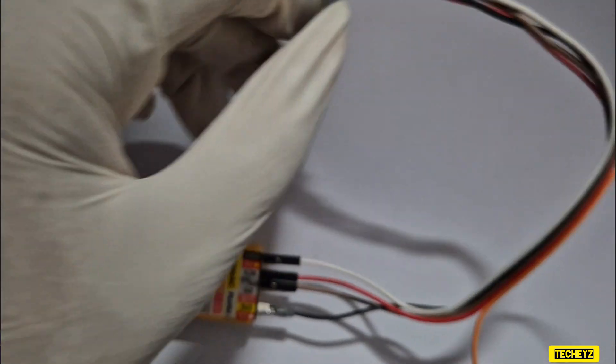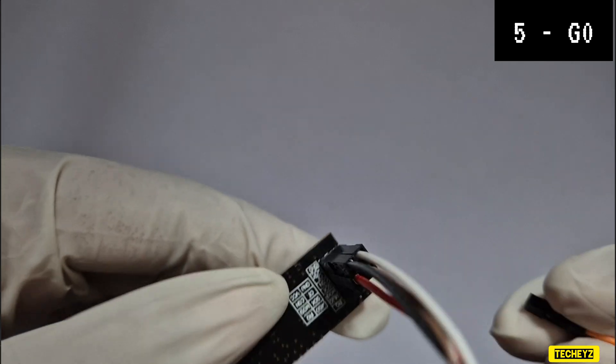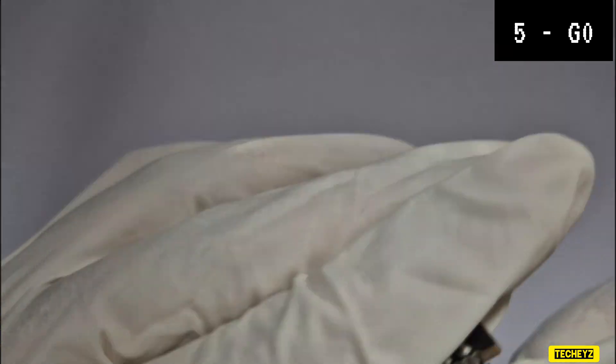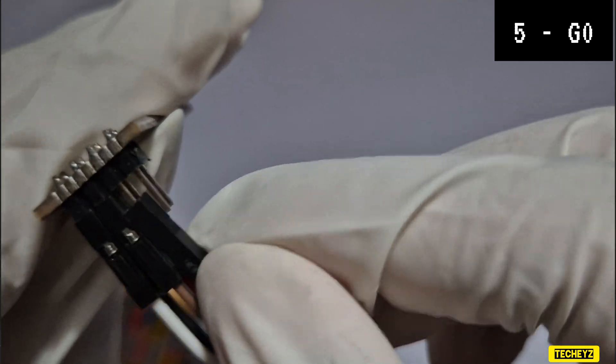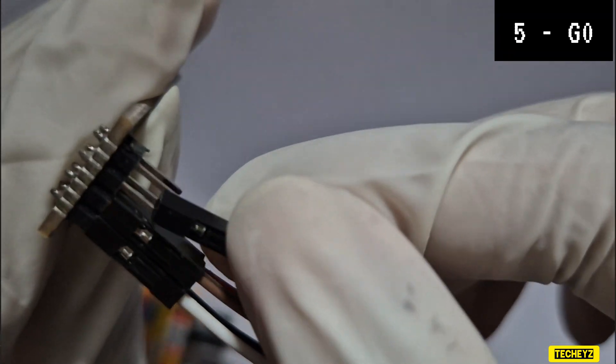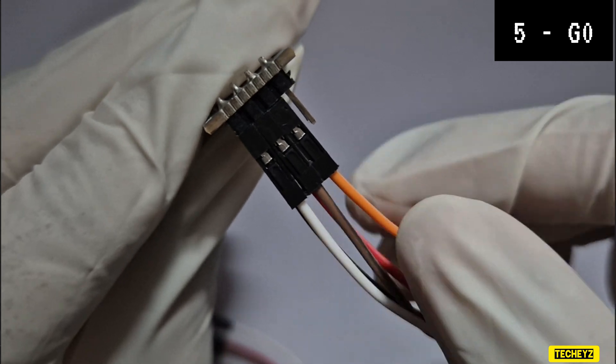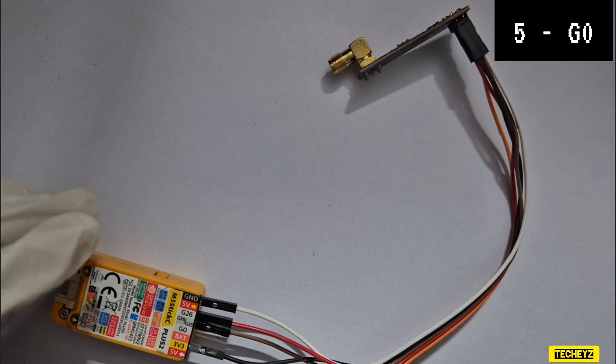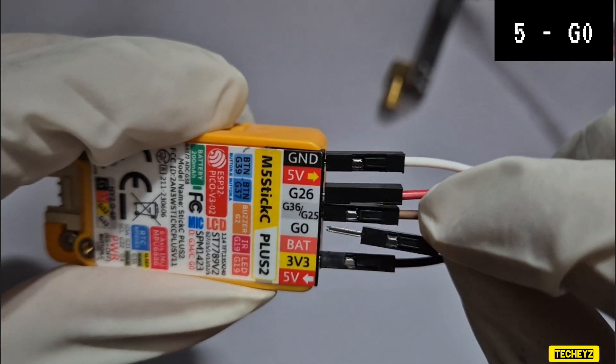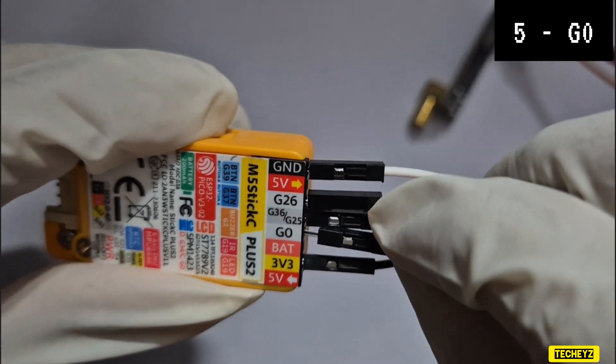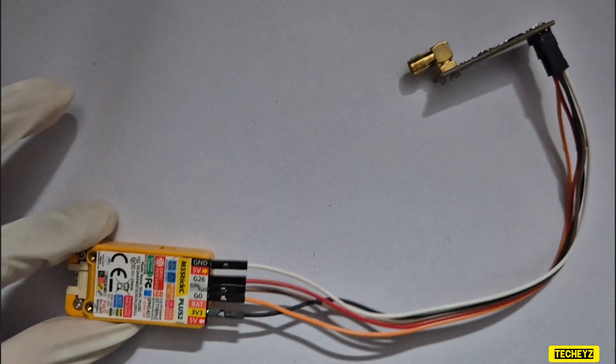Now I will take the fifth wire, the orange wire and I will be plugging into the fifth pin. And that will go in the G0 port.